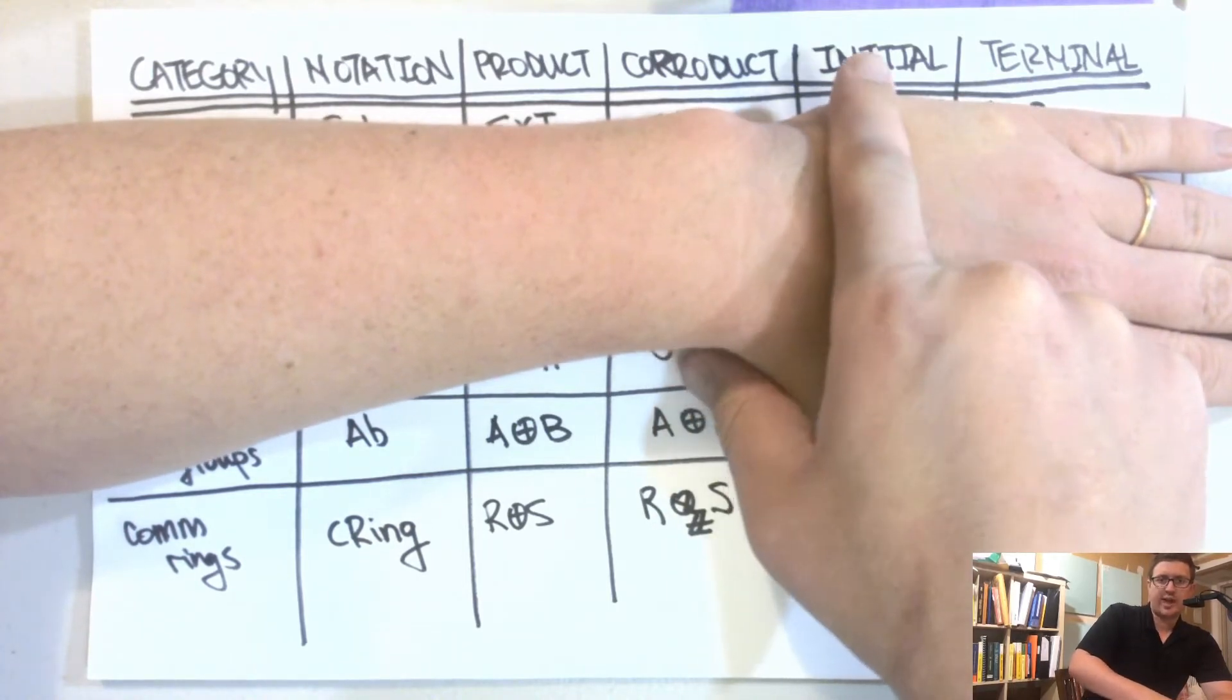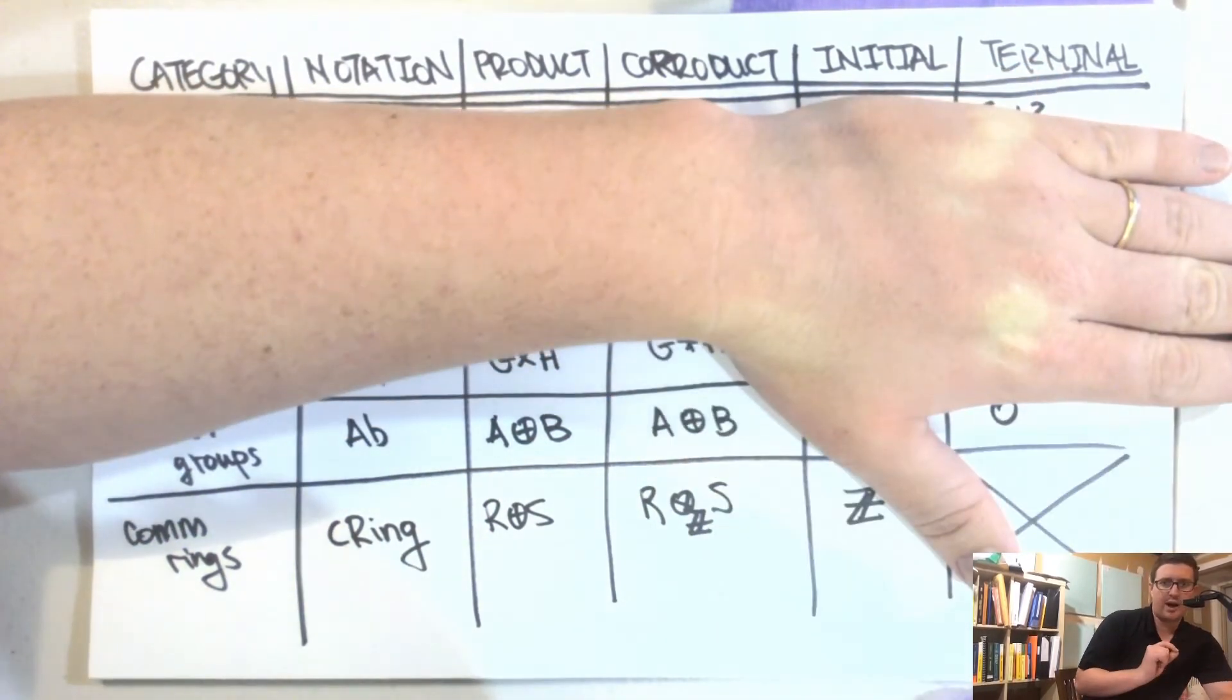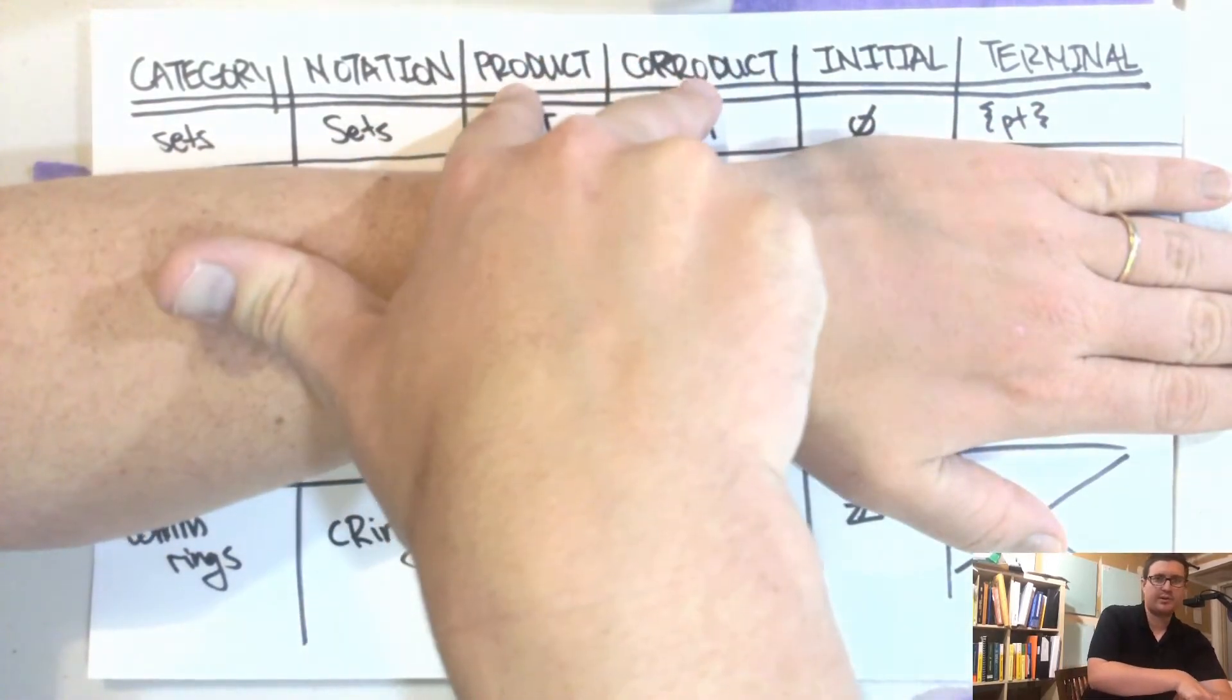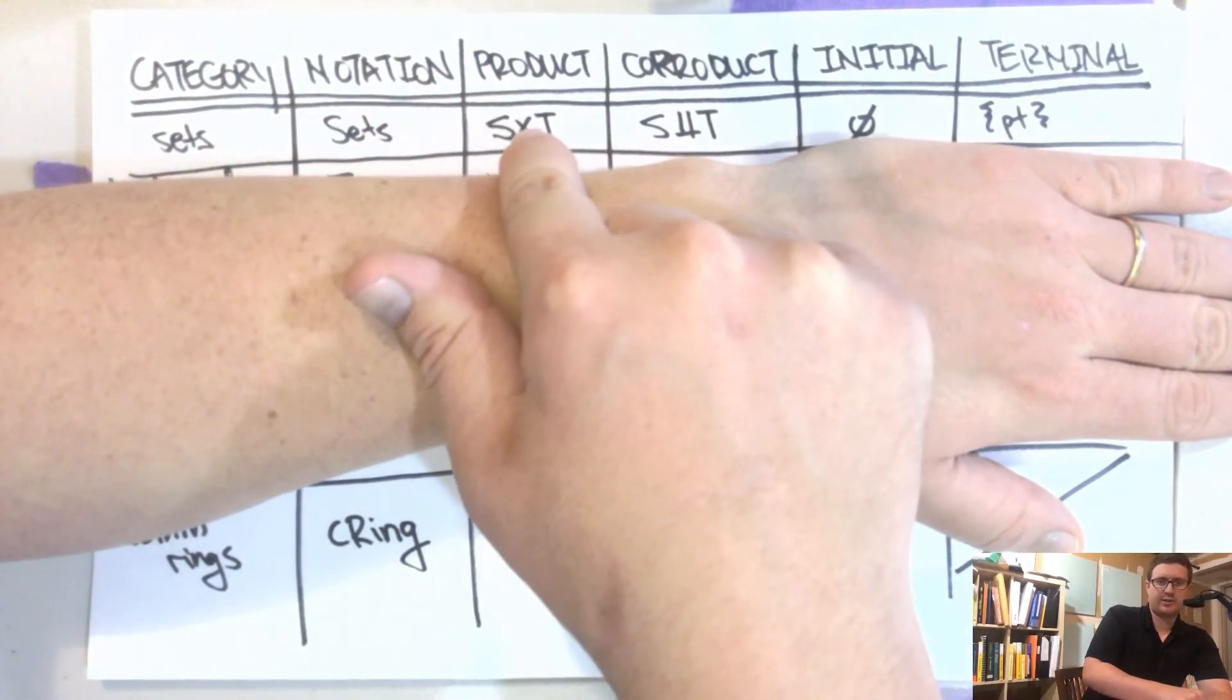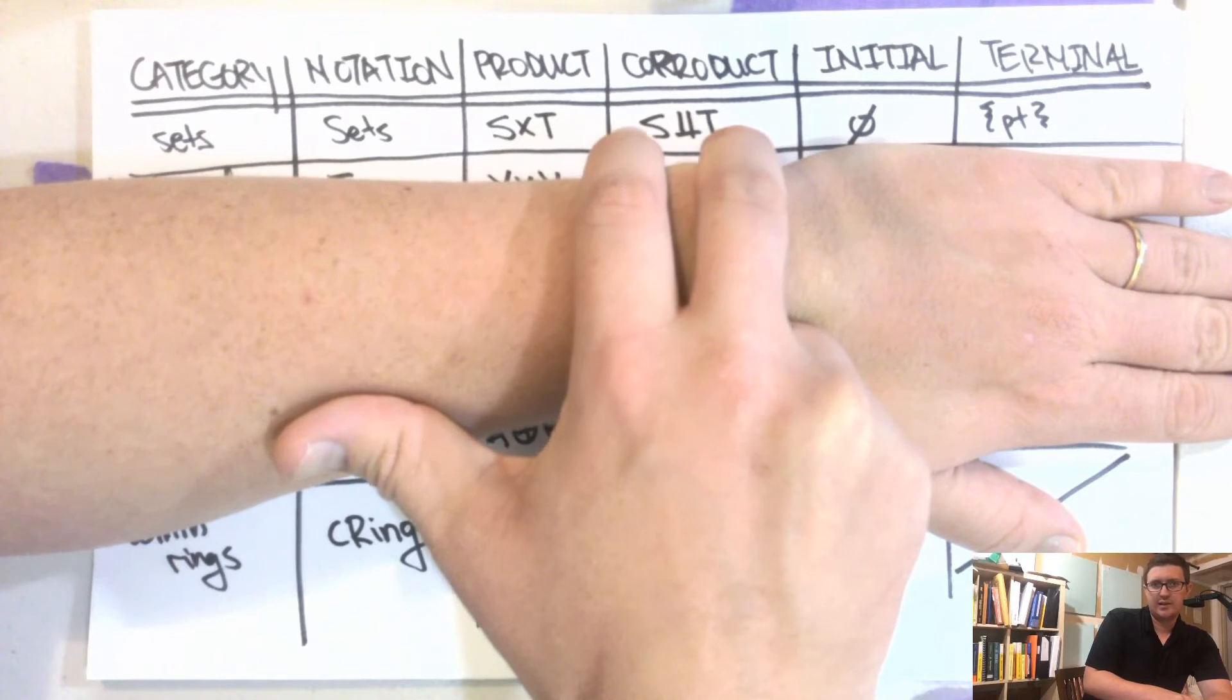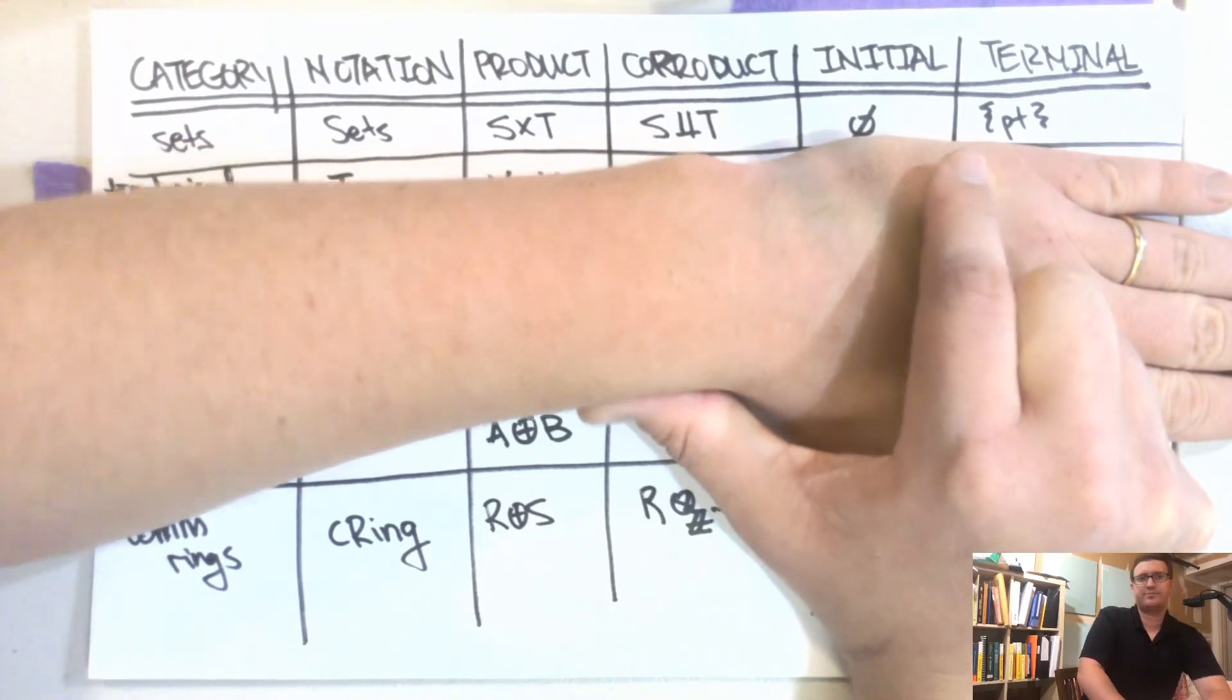So an initial object of a category is an object which admits a unique morphism to every other object in the category. A terminal object is kind of the opposite. It's an object where every object in the category maps to that object, and the map is unique. These two things have nice universal properties as well, and we'll describe that in a second, but if we look at sets, I'm going to write the category here, the notation here. So the product is just the Cartesian product of two sets where you take the tuples. The co-product is the disjoint union of two sets. The initial object is the empty set because for every set, the empty set has a function, there's a function from the empty set to that set, and then there's the terminal object, which is a point. So for every set, there's a function to the point here.